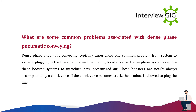What are some common problems associated with dense phase pneumatic conveying? Dense phase pneumatic conveying typically experiences one common problem: plugging in the line due to a malfunctioning booster valve. Dense phase systems require booster systems to introduce new pressurized air. These boosters are nearly always accompanied by a check valve. If the check valve becomes stuck, the product is allowed to plug the line.